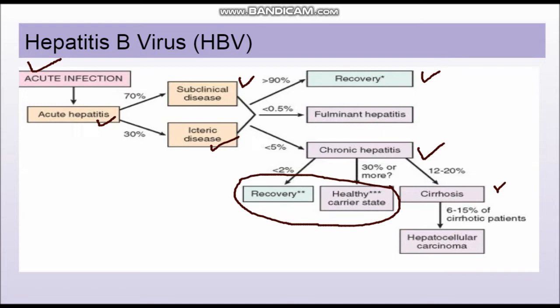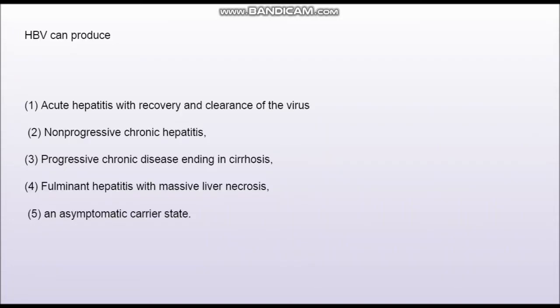There is one more category which is very rare — it occurs in less than 0.5 percent of patients. This is fulminant hepatitis, a type of hepatic failure in which there is hepatic necrosis and a very poor prognosis.